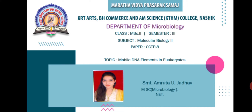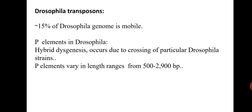Welcome students. Today's topic is mobile DNA elements in eukaryotes. We are going to see P elements in Drosophila and the TY elements. First we'll see the Drosophila transposons. Around 15% of the Drosophila genome is mobile, and the P elements in Drosophila cause hybrid dysgenesis that occurs due to the crossing of particular Drosophila strains.